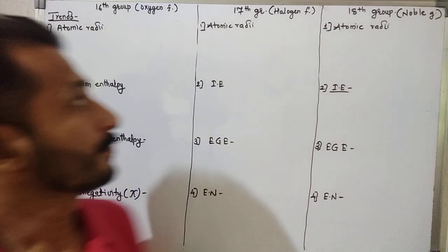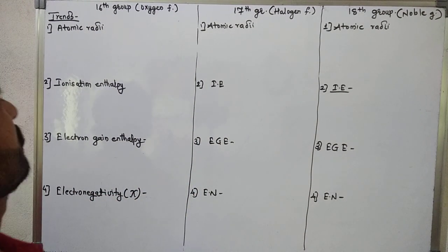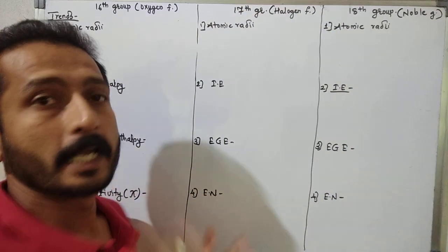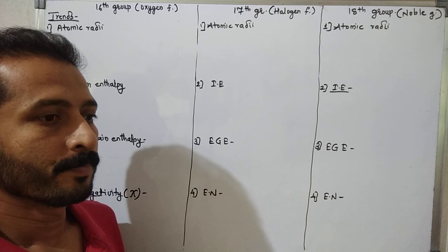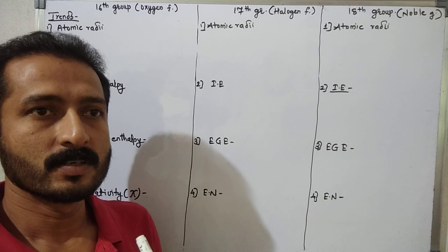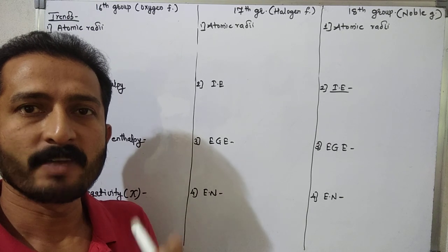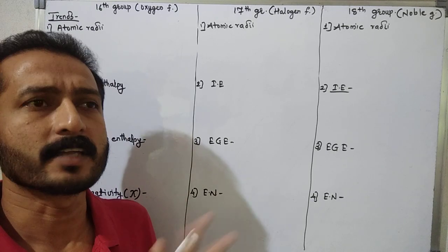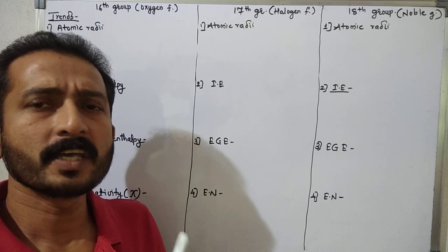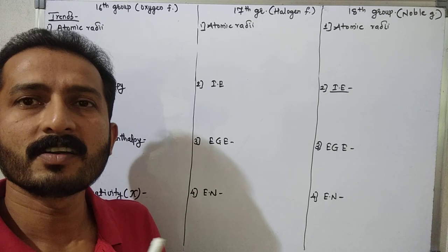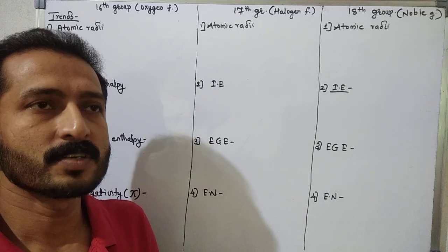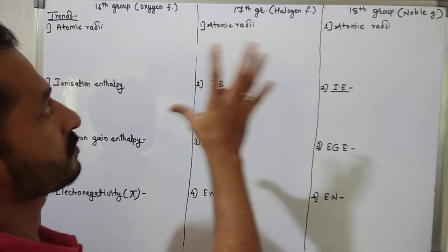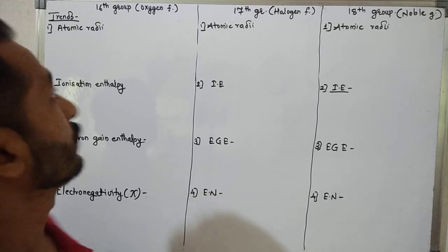Good morning students. In this video we are starting the trends in the periodic table. Generally for the 16th, 17th, and 18th groups, the P-block elements are a combination of metals, non-metals, metalloids, and radioactive elements. Therefore they show variation in properties and different trends, with certain drastic observations in periodic table properties.